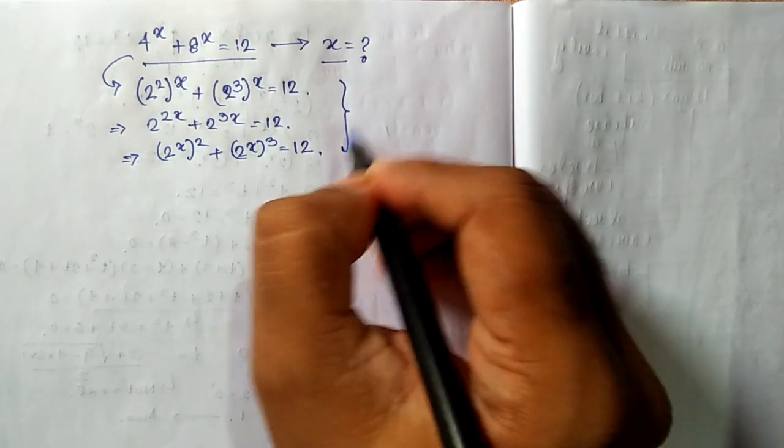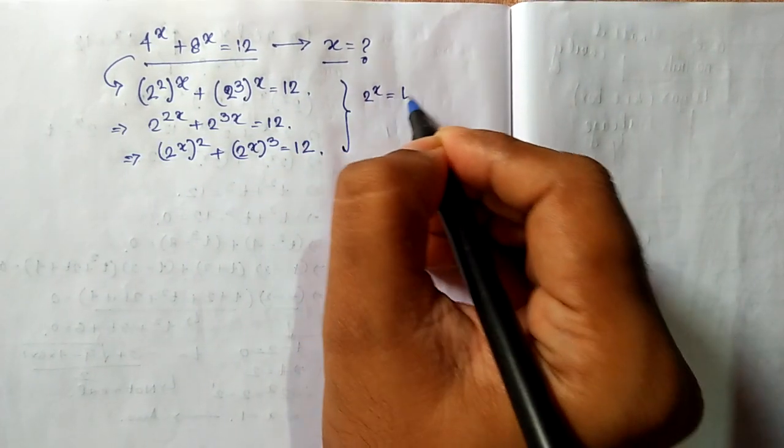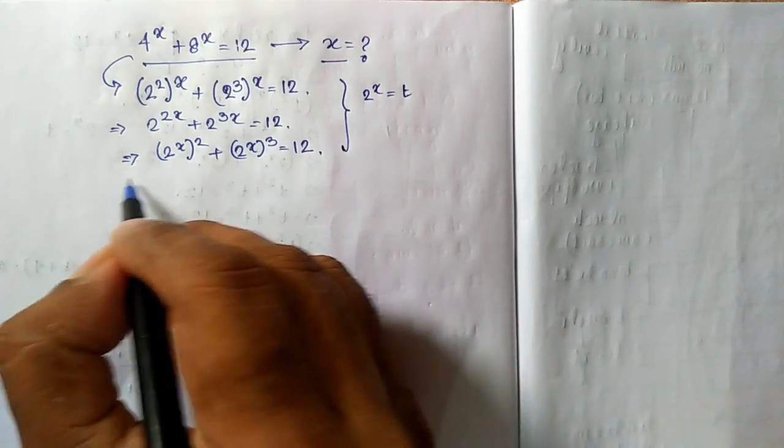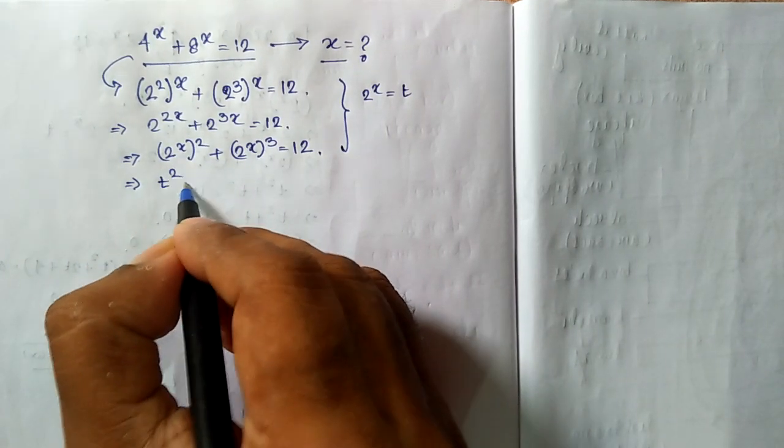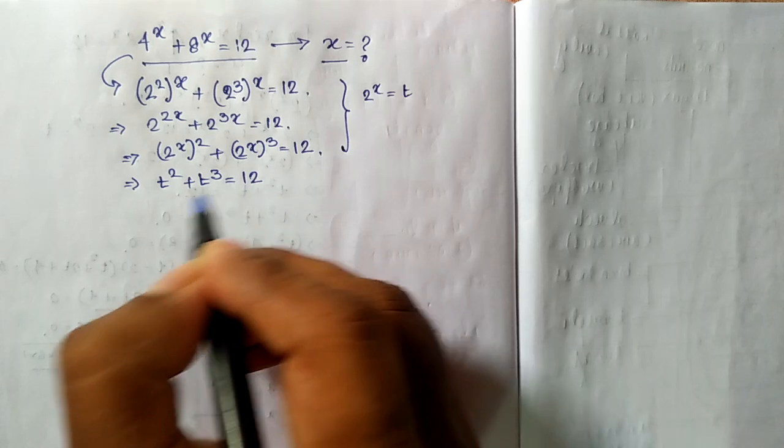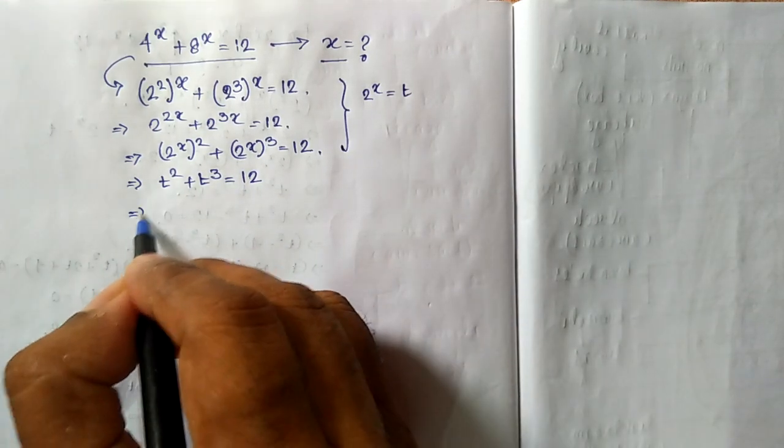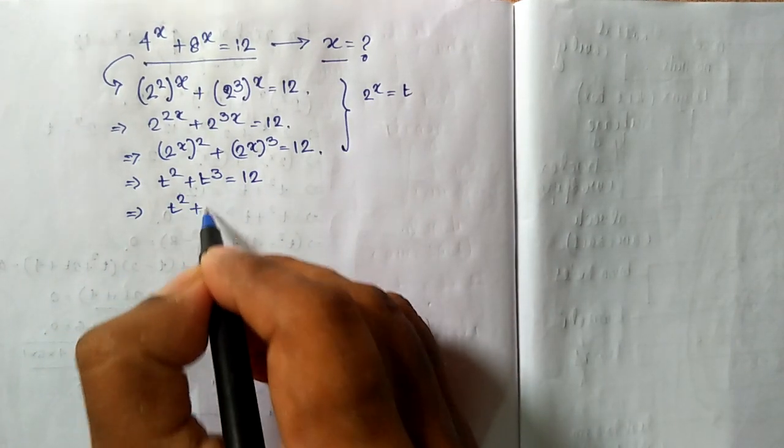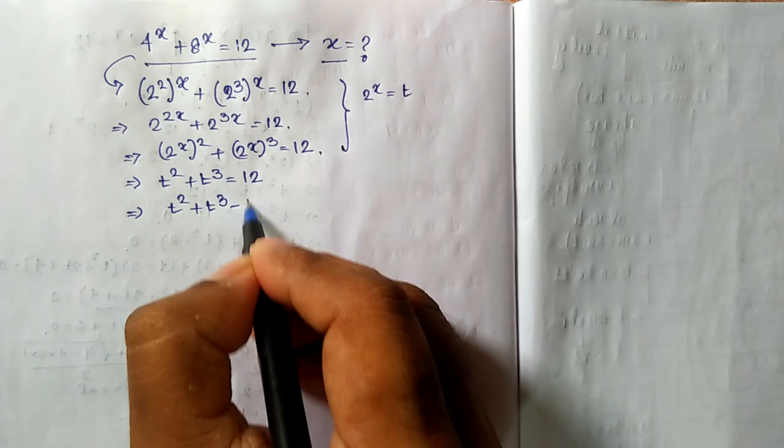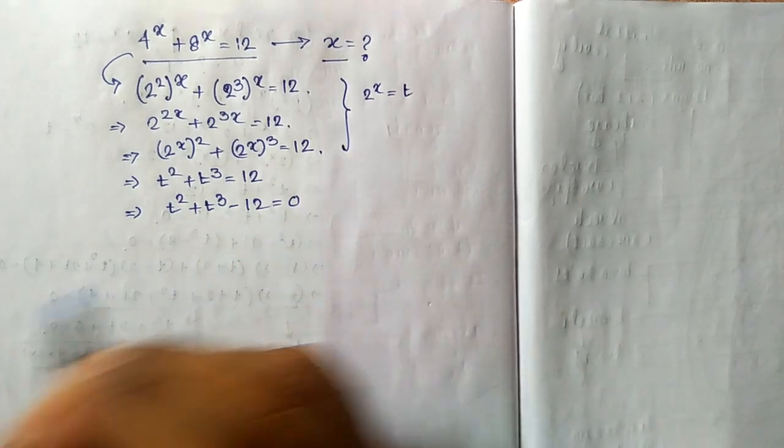I am assuming 2 to the power x as a new variable t. So this expression can be written as t squared plus t cubed equal to 12. Taking 12 to the left side of equality sign, I am writing this as t squared plus t cubed minus 12 equal to 0.